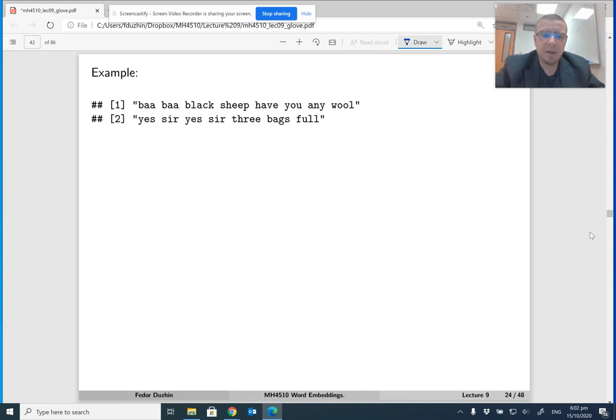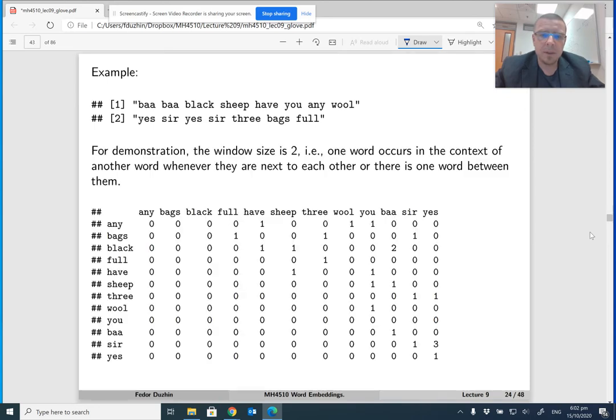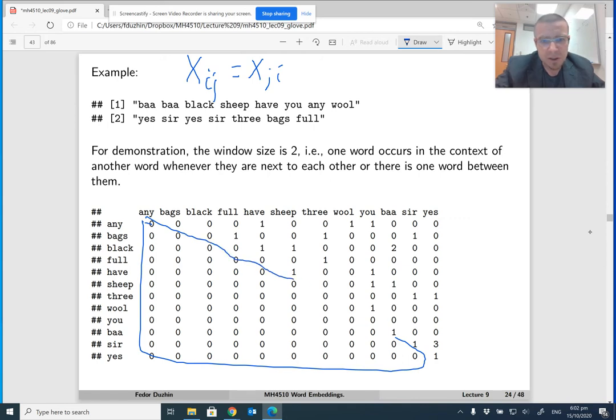Well, here is an example of computing the word co-occurrence matrix. So there are just two documents here, and there are 12 words, so 12 terms. And if the window size is 2, so one word occurs in the context of another word whenever they are next to each other. And by the way, when I printed this, the term document matrix is actually symmetric, so x_ij equals x_ji. I computed it in R, so when I printed it, it is printed so that whatever is on the diagonal and below the main diagonal is just printed as zeros. So when you look at the output of this term co-occurrence matrix in R, you just simply ignore these zeros. So the interesting part here is above the diagonal.